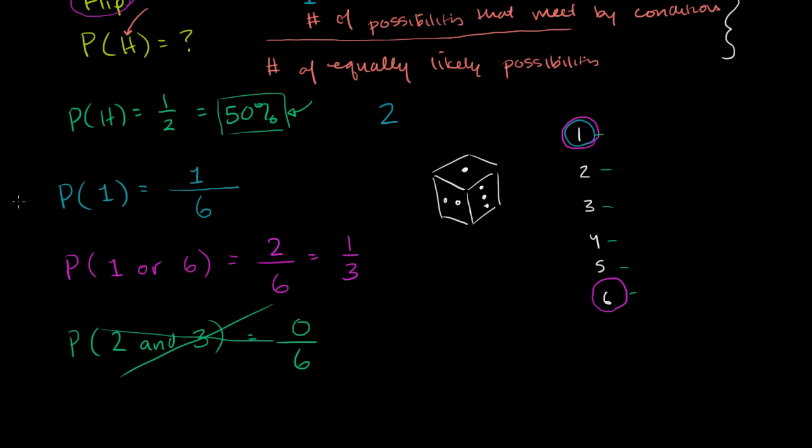Now what is the probability of getting an even number? So once again, you have six equally likely possibilities when I roll that die. And which of these possibilities meet my conditions? The condition of being even. Well, 2 is even, 4 is even, and 6 is even. So three of the possibilities meet my conditions, meet my constraints. So this is 1/2. If I roll a die, I have a 1/2 chance of getting an even number.